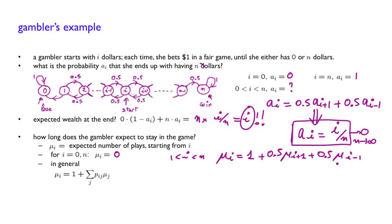Now, you can solve this system. I will let you do that. There are many ways to do this. But the solution that you're going to have is that μ_i will be equal to i times (n minus i). This is the result.